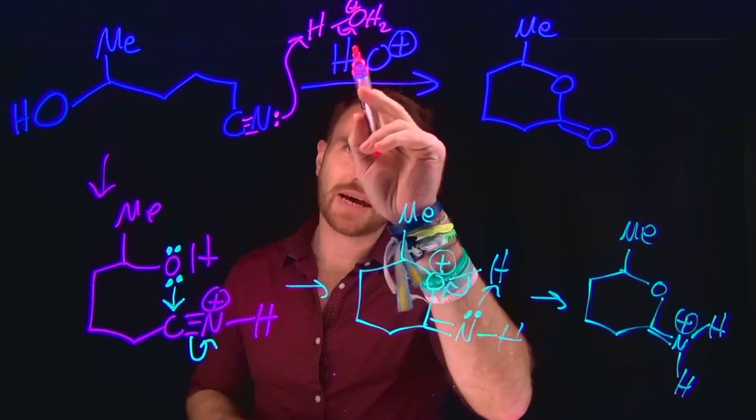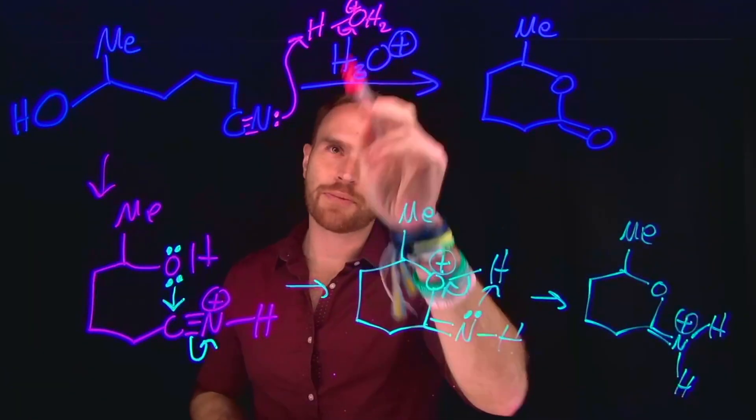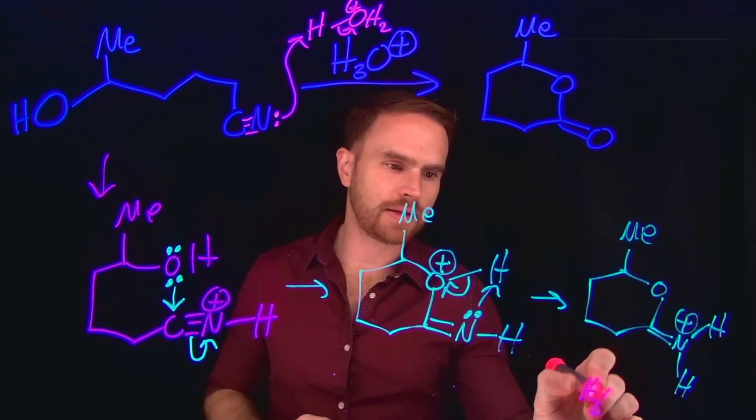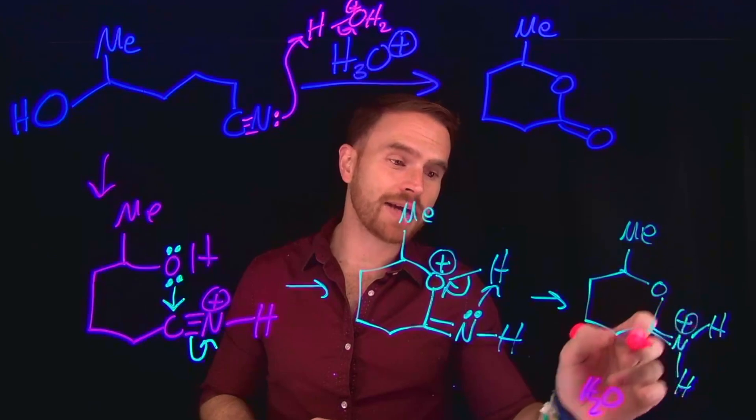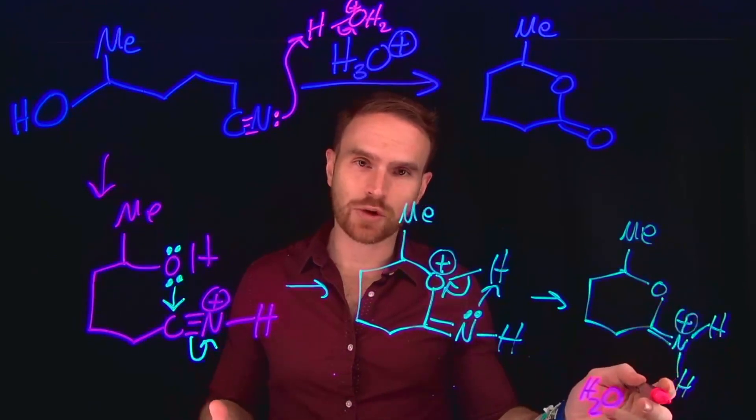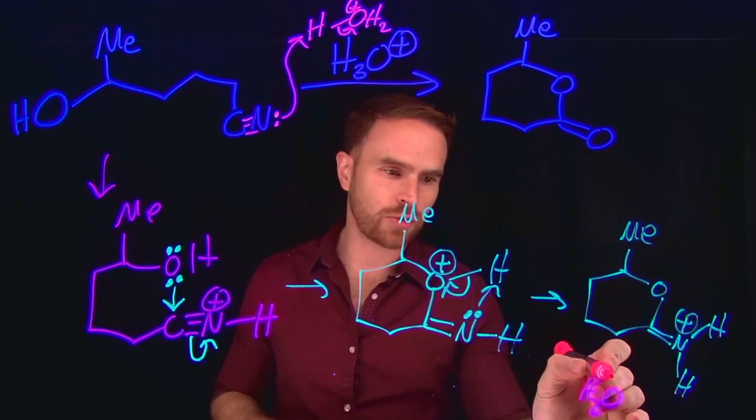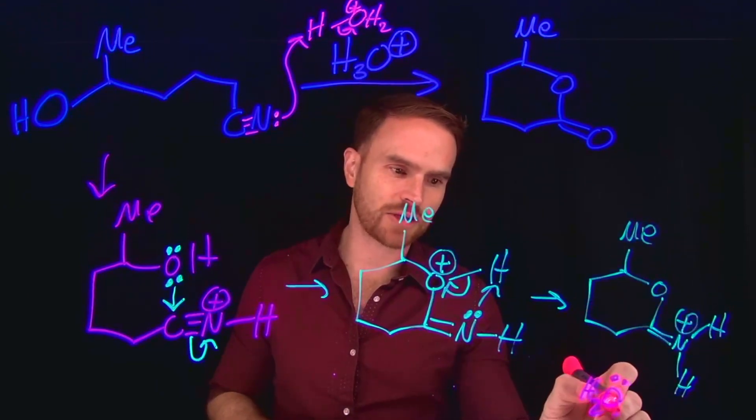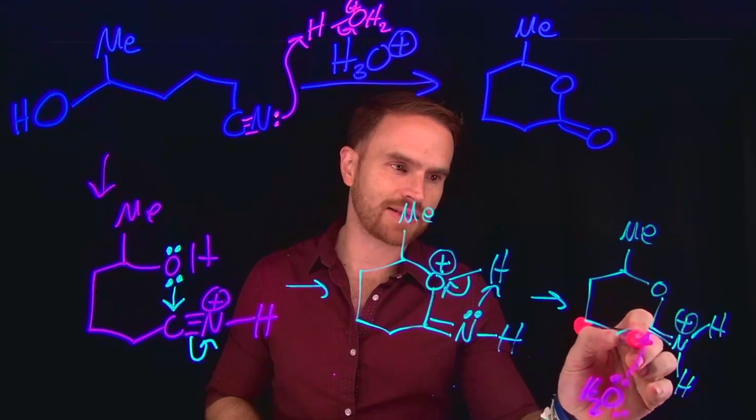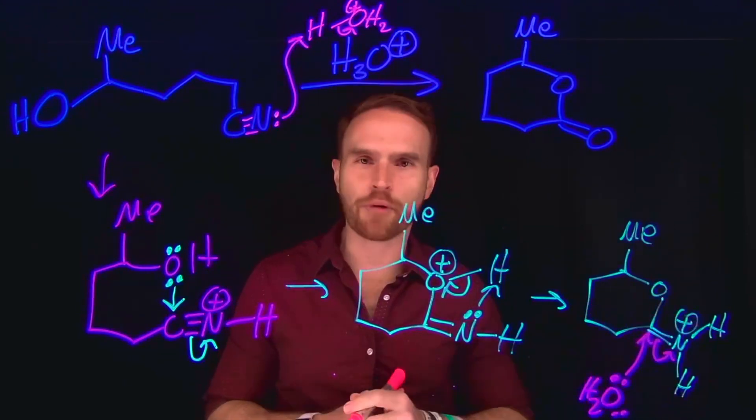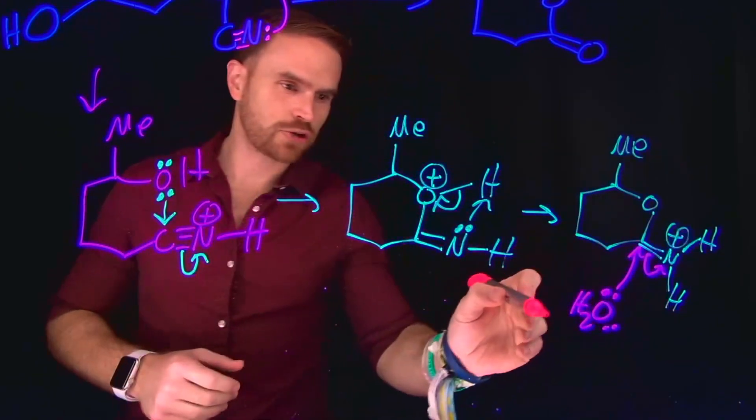And remember, in this very first step, we generated water following deprotonation of the acid. And what we have done is we have made the carbon of this iminium ion highly susceptible to nucleophilic attack because it's adjacent to a nitrogen with a positive charge. So therefore, water can act as a sufficient nucleophile and attack this carbon position to free up these electrons, giving us a primary amine.